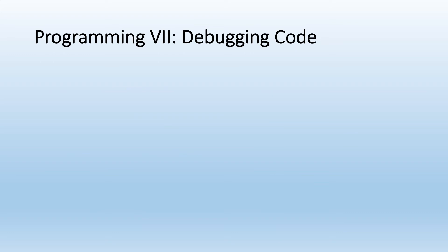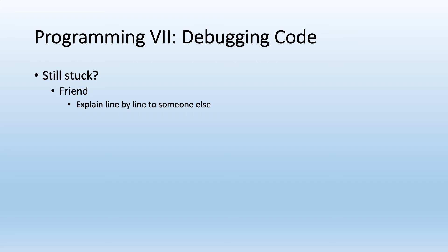If you're still stuck and can't make progress, get a friend or peer who knows your code. Explain to them line by line what you're trying to do and see if they agree. The internet is also your friend, though it's more like an acquaintance — incredibly useful, but not everything you find will be directly applicable to your problem. Use Google and online forums like Stack Exchange to look for help.